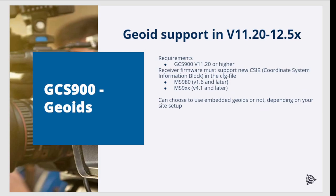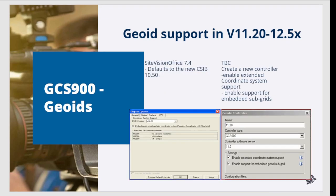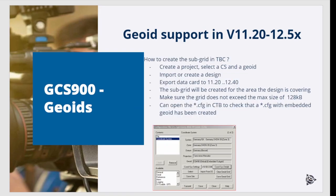This slide lists the software and firmware requirements for the embedded GeoEat subgrid support. For the embedded subgrid support in GCS 900 versions 1120 to 12.5, certain settings had to be made in either SiteVision Office or Trimble Business Center software. This slide is for reference only and illustrates the complexity of creating embedded GeoEat subgrids for the user.